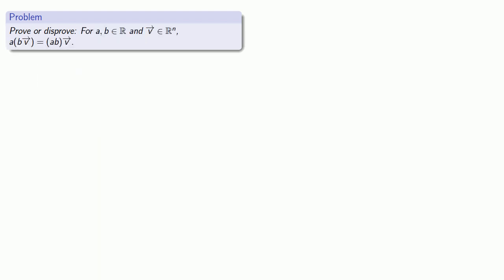Well that worked out really nicely. Let's see if we can do something else. How about scalar associativity? So suppose I have two scalars in r, and some vector in rn.